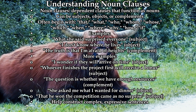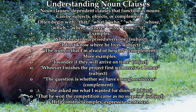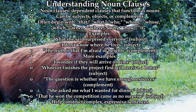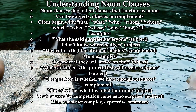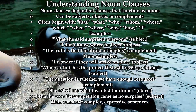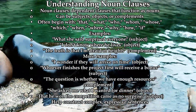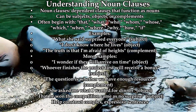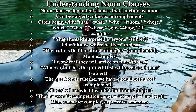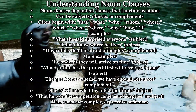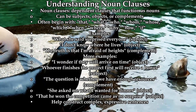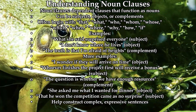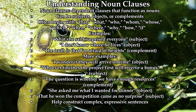Here are a few more examples to help you understand noun clauses better. 1. 'I wonder if they will arrive on time' — the noun clause 'if they will arrive on time' acts as the object. 2. 'Whoever finishes the project first will receive a bonus' — the noun clause 'whoever finishes the project first' serves as the subject. 3. 'The question is whether we have enough resources to complete the task' — the noun clause functions as the complement. 4. 'She asked me what I wanted for dinner' — the noun clause 'what I wanted for dinner' acts as the object.